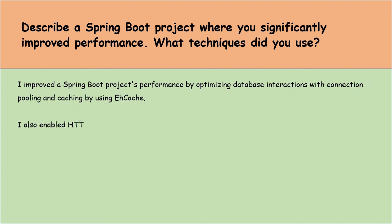How can you implement pagination in a Spring Boot application? To implement pagination in a Spring Boot application, I use Spring Data JPA's Pageable interface. In the repository layer, I modify query methods to accept a Pageable object as a parameter. When calling these methods from the service layer, I create an instance of PageRequest, specifying the page number and page size I want. Spring Data JPA handles pagination logic automatically, returning a Page object that contains the requested page of data along with useful information like total pages and total elements. This allows me to efficiently manage large datasets by retrieving only a subset of data at a time.